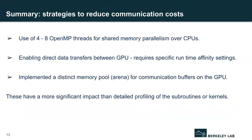In summary, I talked about three strategies to reduce communication costs: OpenMP-based shared memory programming, enabling direct GPU transfers, and a distinct memory pool for communication buffers. These have had a more significant impact than detailed profiling of subroutines or kernels.